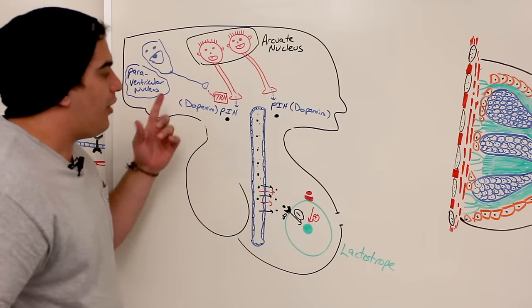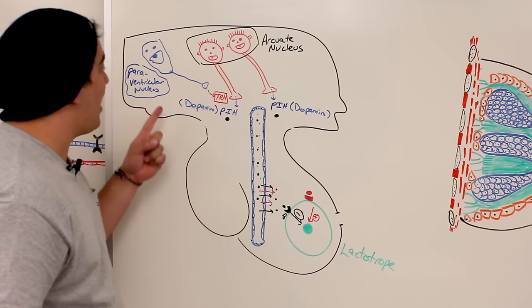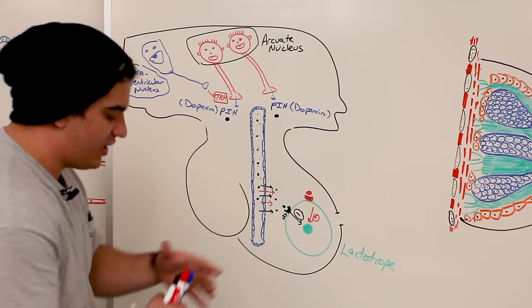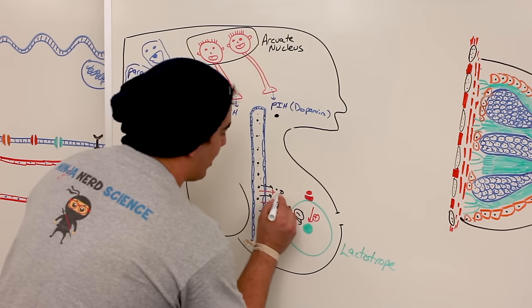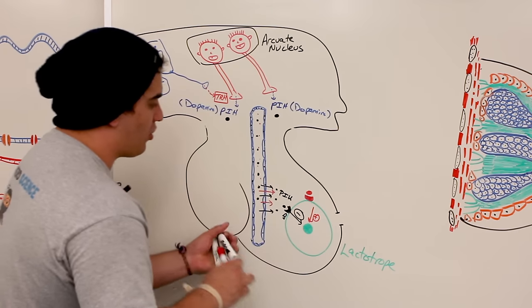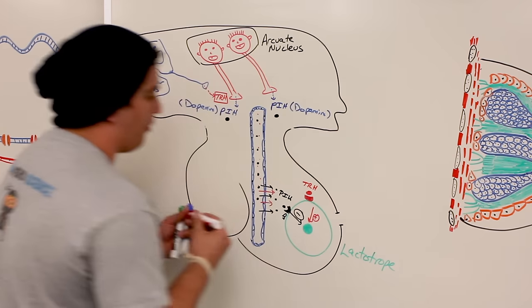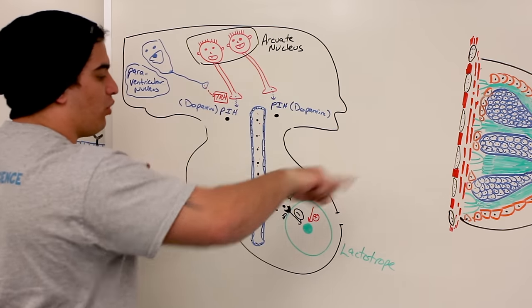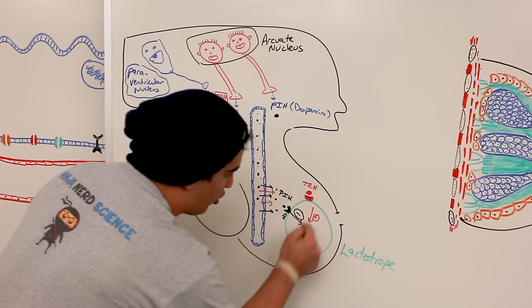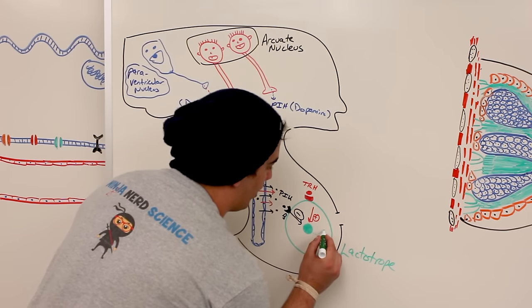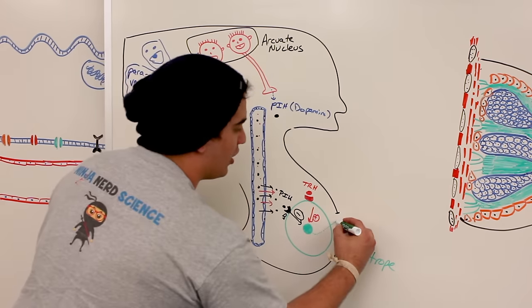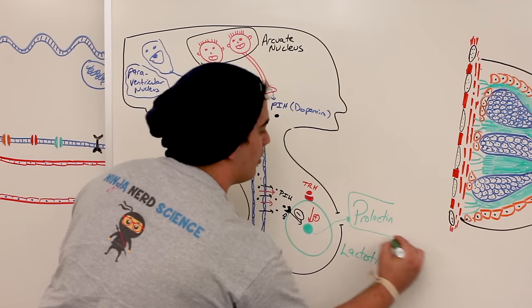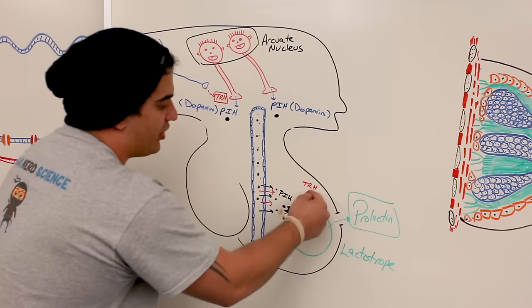So we need to know all the stimulatory and inhibitory factors. The inhibitory one — the black dot — is prolactin inhibiting hormone. The red dot is thyrotropin releasing hormone, which is one type of prolactin releasing hormone. TRH gives the stimulatory signal, and then this lactotrope undergoes transcription and translation to produce prolactin, the hormone we care about.